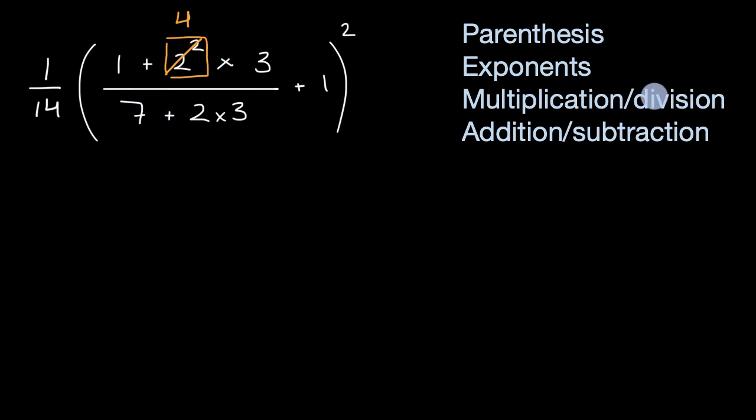So then we go to multiplication and division. We know by how this fraction sign is written that we need to evaluate the numerator and then divide it by the entire denominator. Now in this numerator, we have to remind ourselves that we do this multiplication before we do this addition. We don't just go left to right.